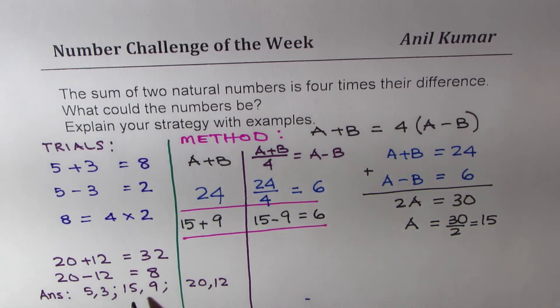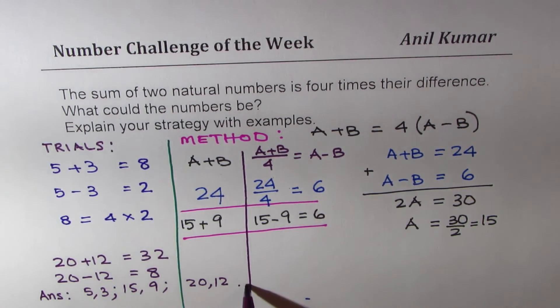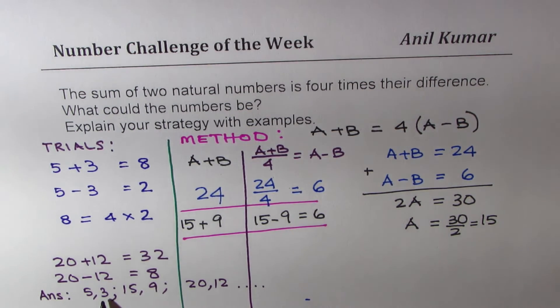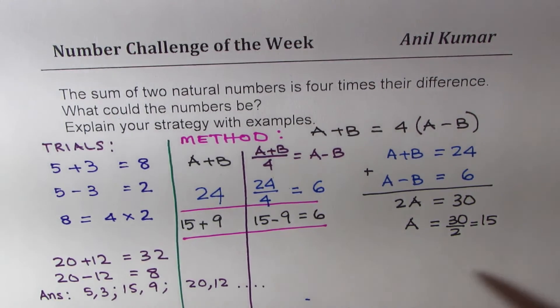Do you see a trend here? If I multiply by 3, I get 15 and 9. If I multiply by 4, I get 20 and 12. I do see a trend here. You could explore this trend and get more solutions. If I multiply by 5, I get 25 and 15. Will that work? Let's see.